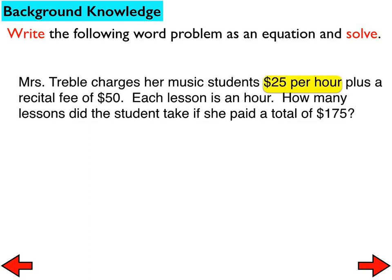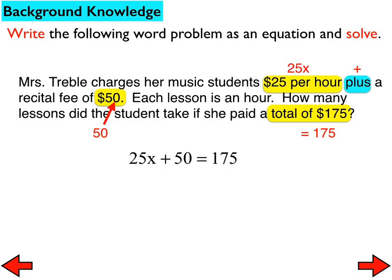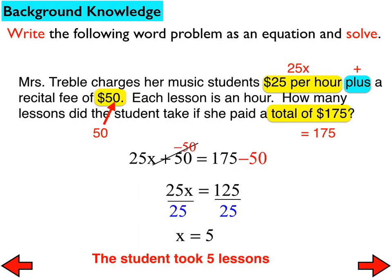So, a little bit of background knowledge. We're looking for common words that lead to certain expressions, like $25 per hour leads to 25x because we're looking for the number of hours, and looking for where it will be plus or minus — in this case it's plus 50. We're typically looking for a total because usually that's what's on one side of our equation. This problem leads to this equation right here. From there, we just do what we've done all year long: subtract or add in that first step, then either multiply or divide in the second step. And since it is a word problem, we do need to answer the question in words, not just x equals 5.